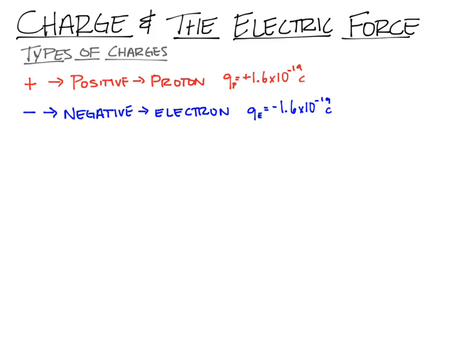You may or may not be familiar with this C — it stands for a Coulomb. It's a unit of charge; it's a huge amount of electrons or a huge amount of protons. But we are going to use Coulombs to measure charge. The charge of one electron is negative 1.6 times 10 to the negative 19th Coulombs.